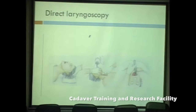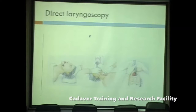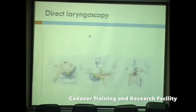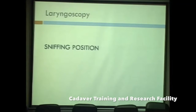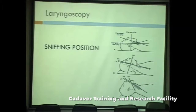For direct laryngoscopy, the first consideration is placement of the patient. What is required is extension at the atlanto-axial joint and flexion at the lower cervical spine, followed by face mask ventilation and intubation. The important element is the sniffing position, which requires neck extension with approximately a 10-centimeter roll placed underneath the head of the patient. We do this to align the oral, pharyngeal, and laryngeal axes to visualize the glottis and introduce the tube.